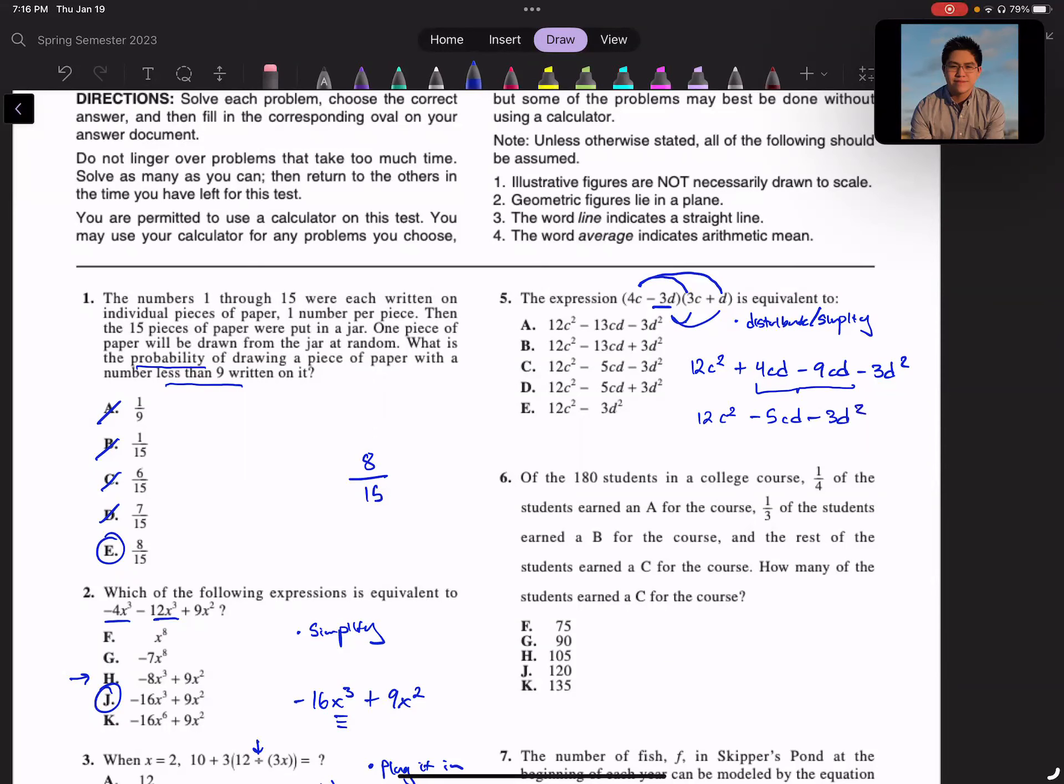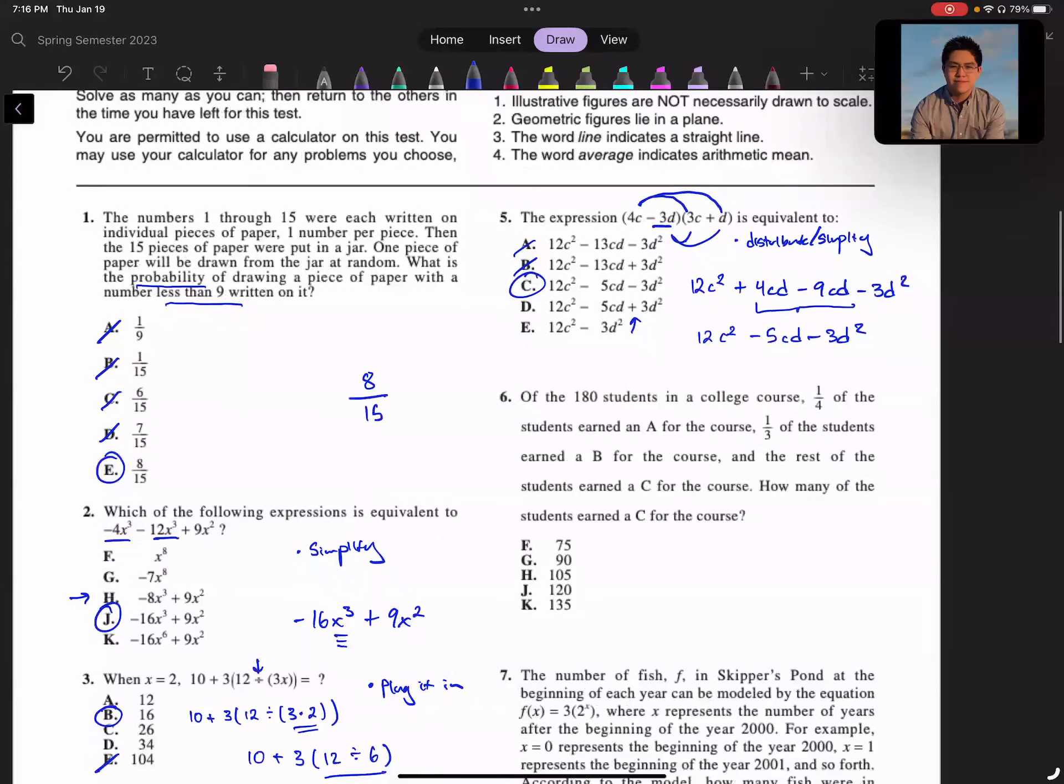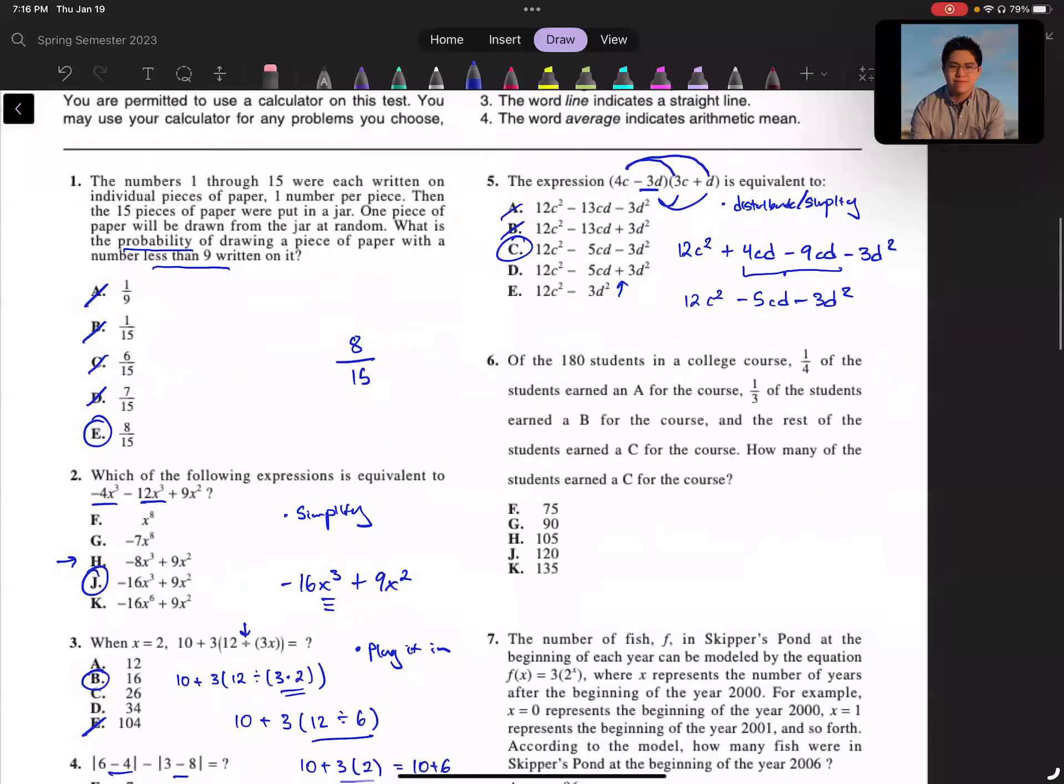Looking at this, remember simplification has the same power, same variables. So it would be these two in the middle here. So I get 12c², 4cd - 9cd just add the coefficient, so you get -5cd - 3d². And then we just want to make sure it's somewhere in these answer choices. This doesn't have a 5, but C is perfect. Just make sure you're careful with the sign. Does this make sense? Yep. I would see a quadratic here. C would be that answer.